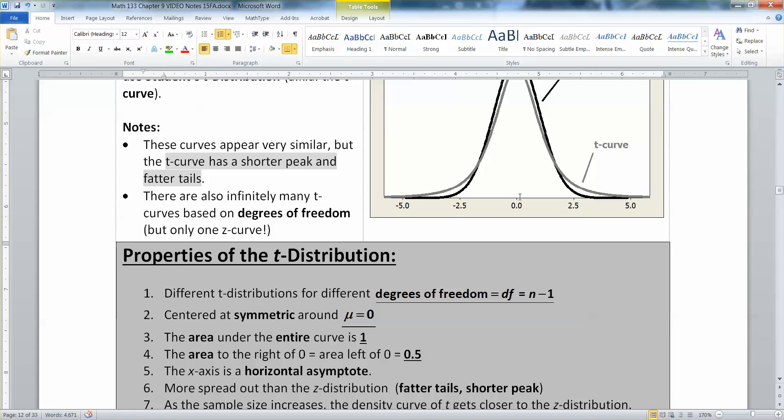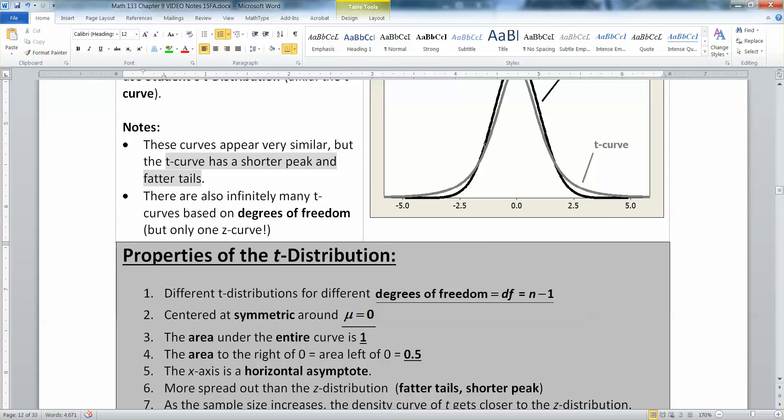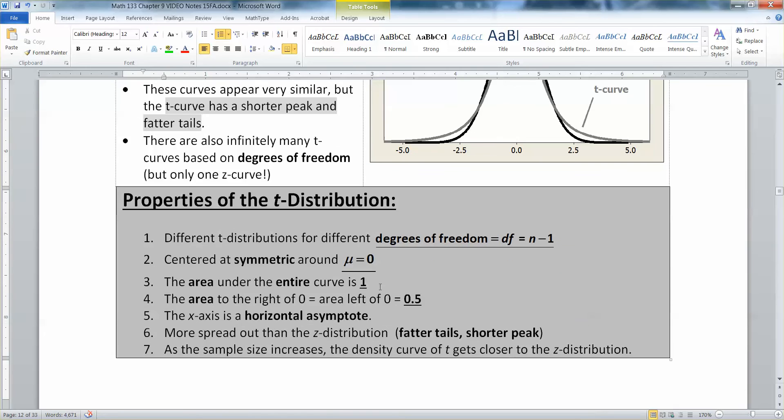It's symmetric around mu equals zero, just like the Z curve. That's why they both have the same center at zero. And just like any probability distribution, because the T curve is a probability density curve, the area under the whole thing is one. That also means the area to the left of the middle and the right of the middle is still 0.5, just like it is with the Z curve.